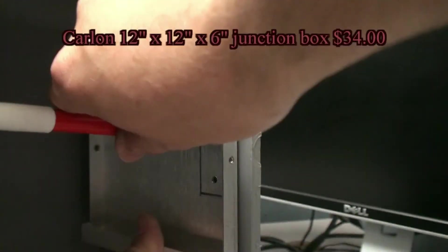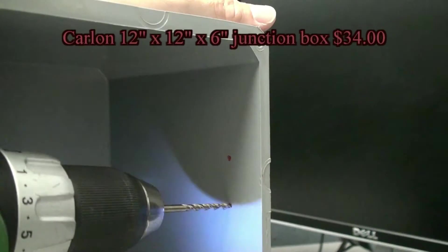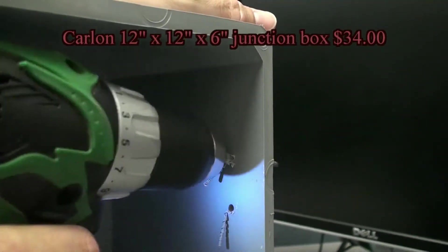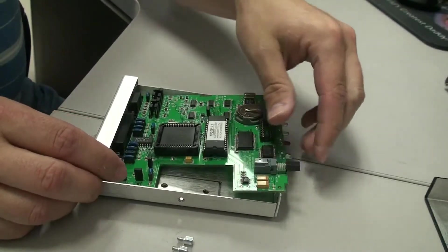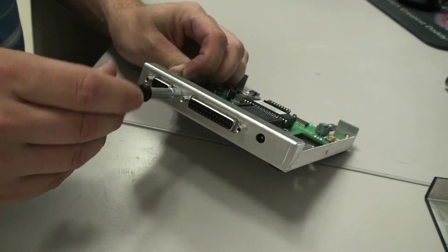Now we can position our TNC enclosure on the sidewall of our electronics box and mark where we want to drill our screw holes. With all the TNC mounting holes drilled, we can put the TNC back together, leaving the cover off.